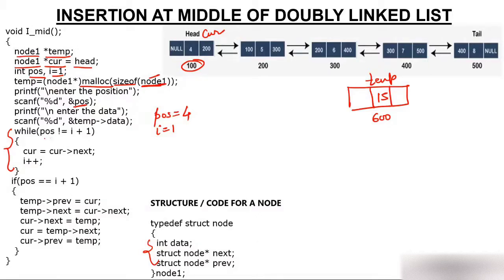We enter the while loop and check: is position not equal to i+1? Position is 4 and i is 1, so 4 is not equal to 1+1=2 — condition is true. We update current to current->next, which is address 200, so current moves to the node at 200. Then i is incremented to 2. We check again: 4 is not equal to 2+1=3 — condition is still true.